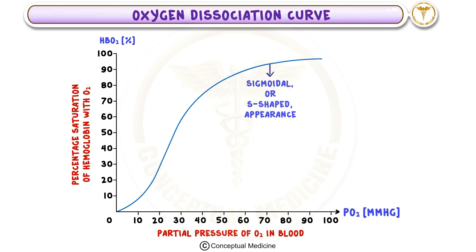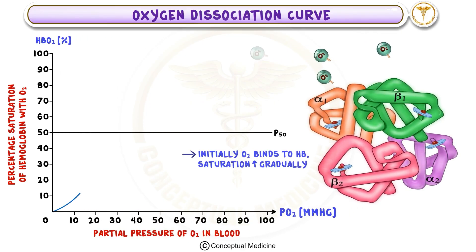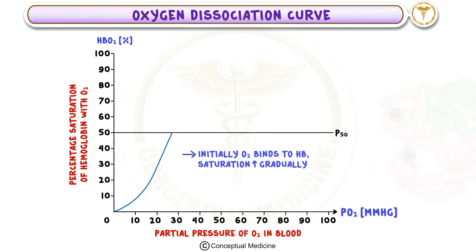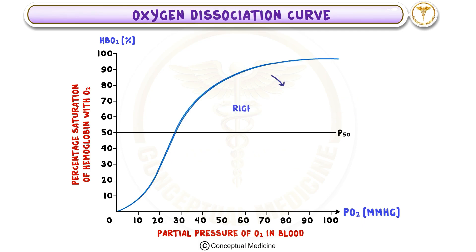The curve has a sigmoidal or S-shaped appearance. Initially, as oxygen binds to hemoglobin, the saturation increases gradually. Once the oxygen binding reaches a critical threshold, the saturation rises steeply before leveling off at higher oxygen pressures. This unique shape is key to how hemoglobin adapts to varying oxygen demands in the body.